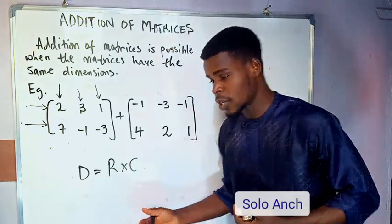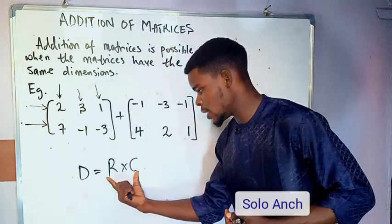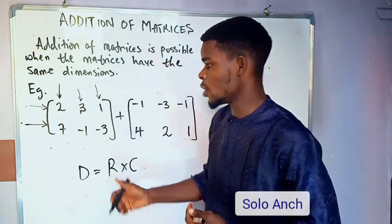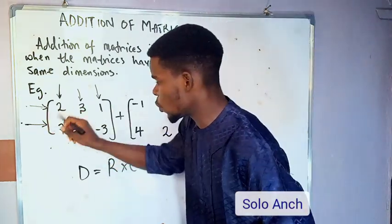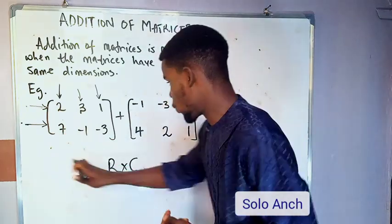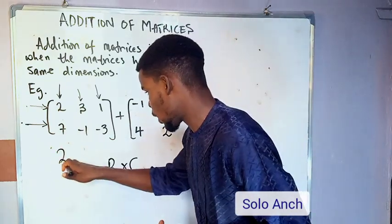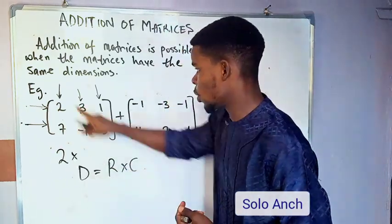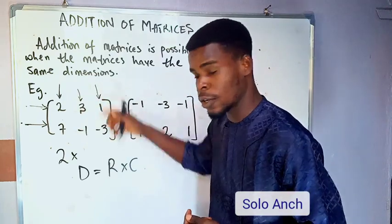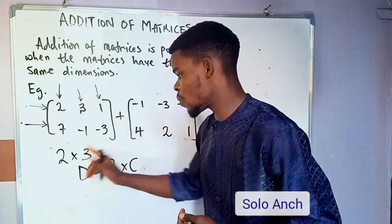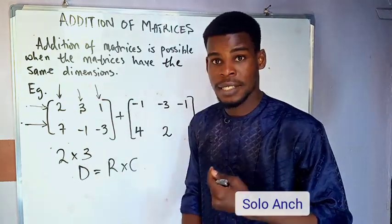You write the number of rows first, then the number of columns. So in this case we have two rows by three columns — this is a 2×3 matrix. That's the dimension.